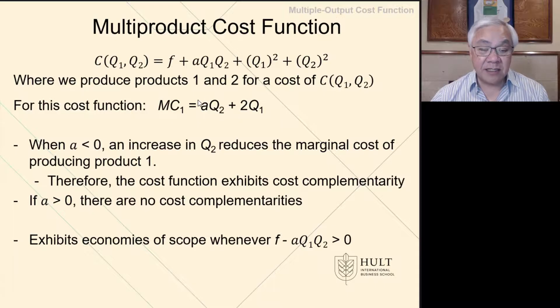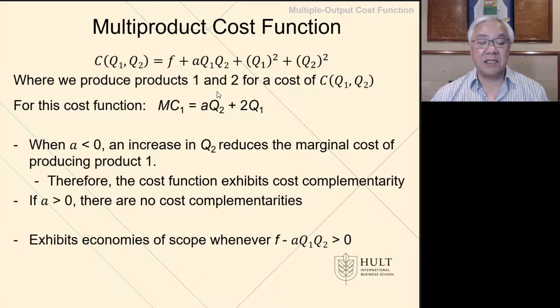And that means that this term A is quite important. If this term A is less than 0, in other words it's negative, that makes this term pretty powerful. Because as Q2 increases, we're going to lower the cost of making product 1. So this is an example of complementary cost, because Q2 has a favorable impact on the cost of making product 1.